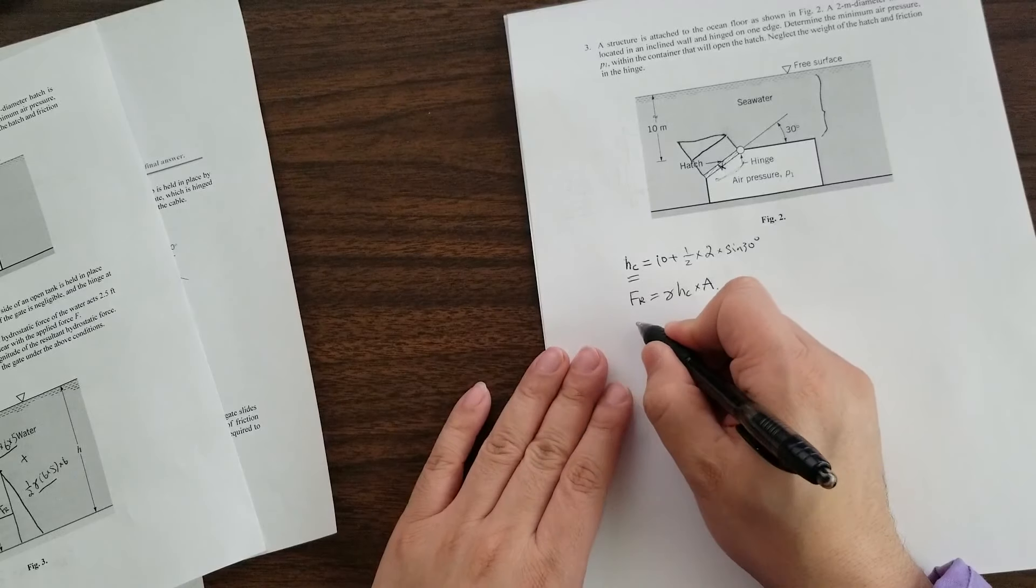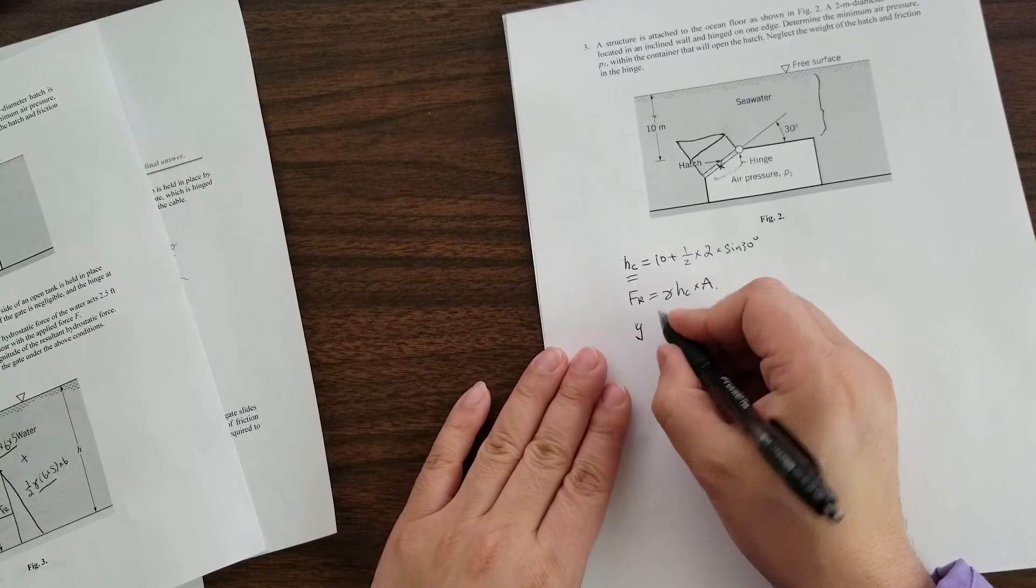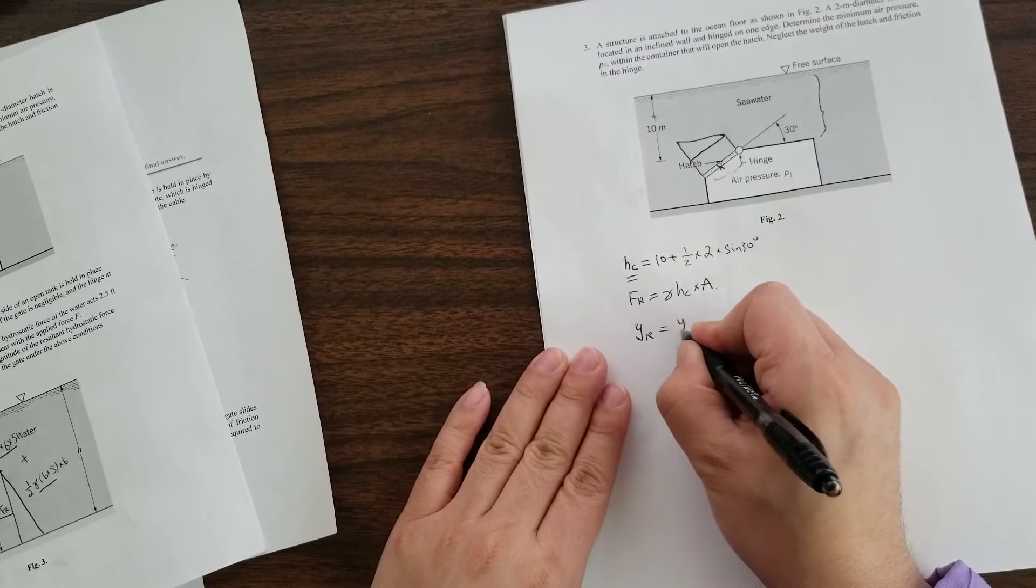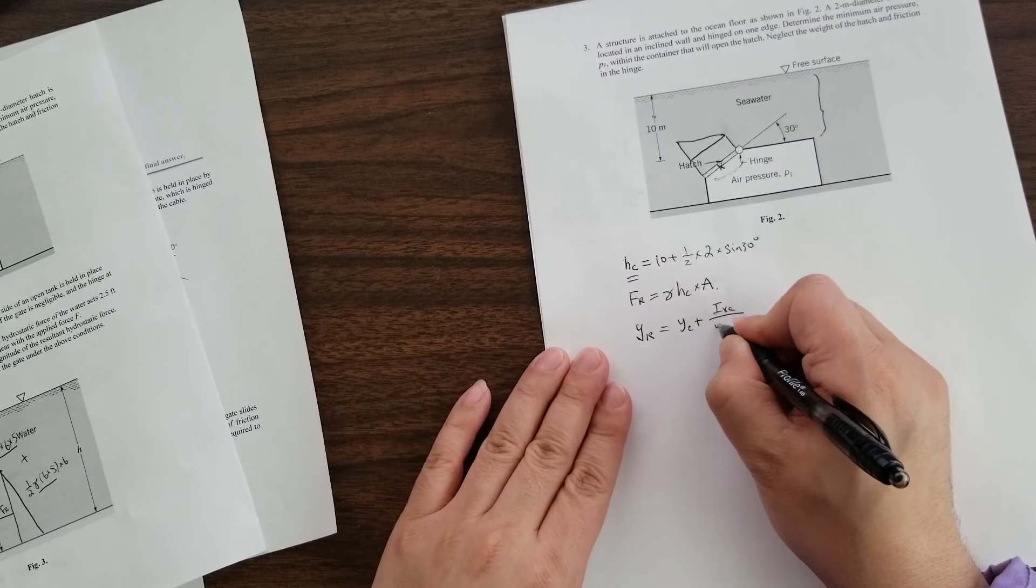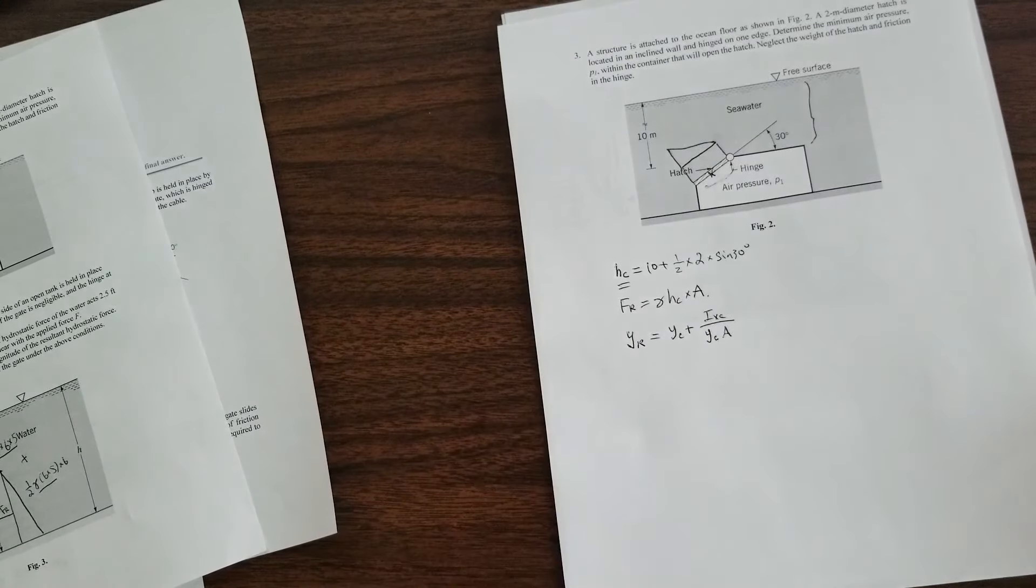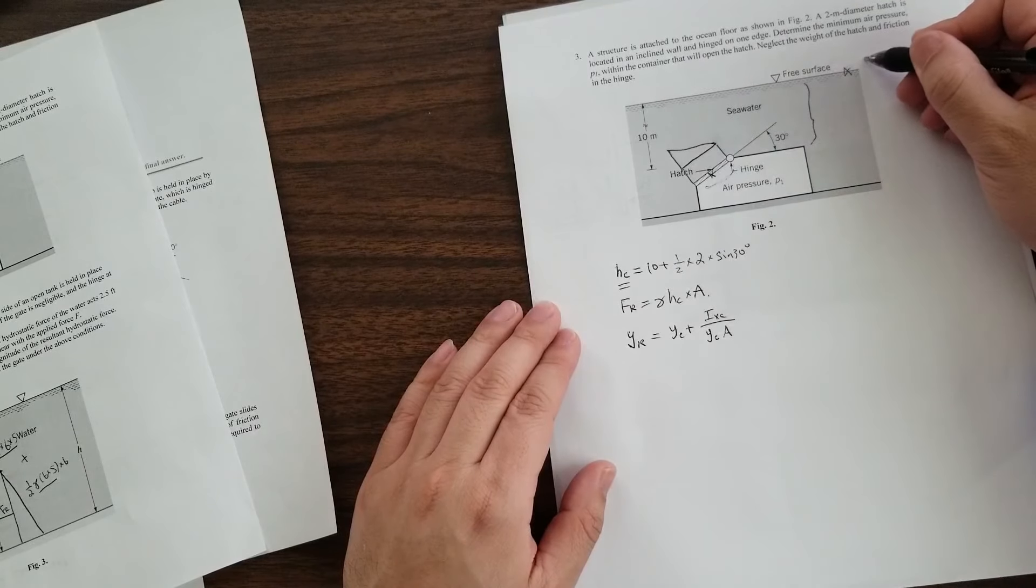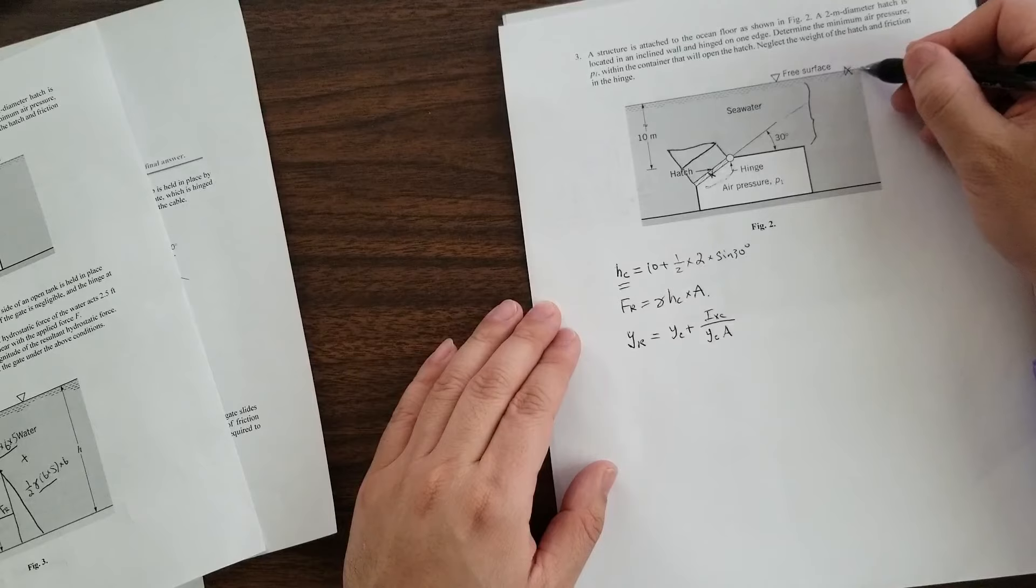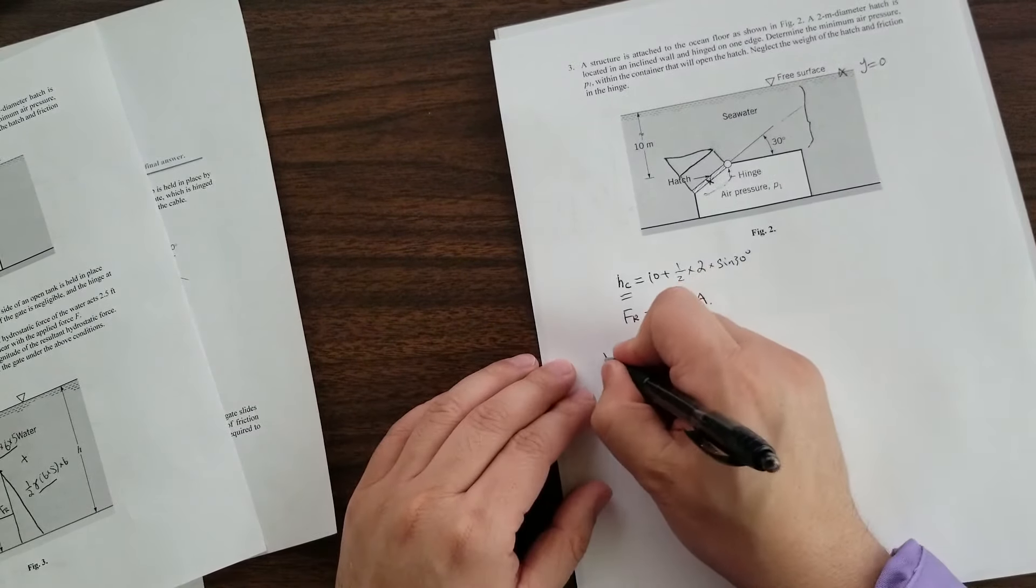So you can use what the first approach in class is that we talked about, that YR is equal to the Y centroid plus IXC over YCA. You can do that. Remember still this Y need to start from the fluid interface. So you have to extrapolate it. And this is where this Y equal to zero is. And this is one approach.